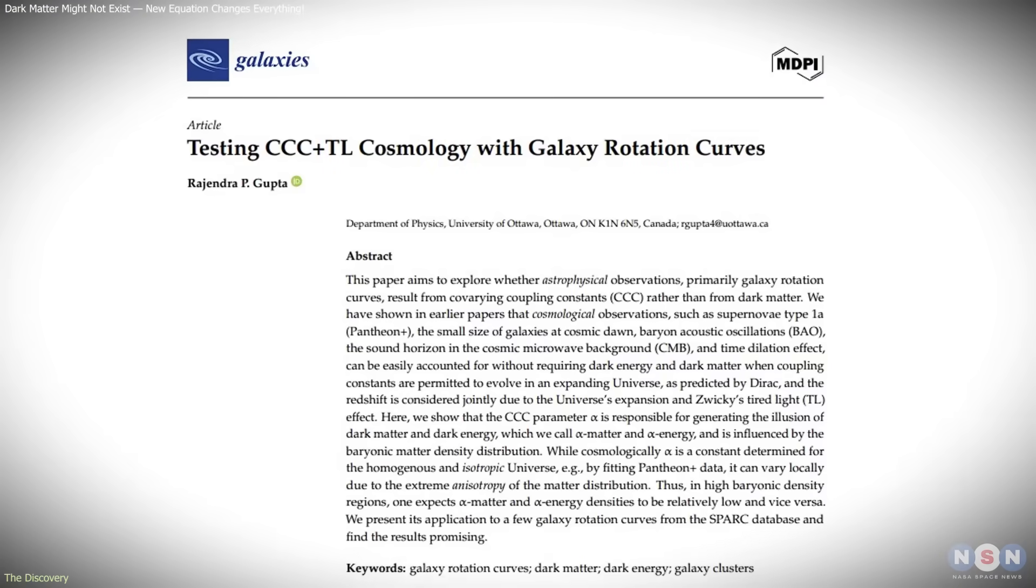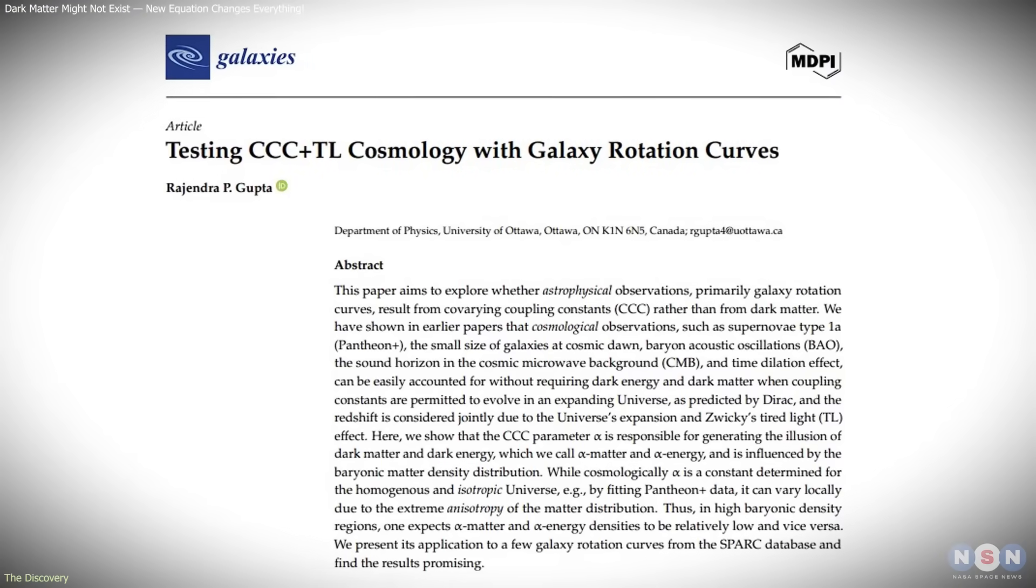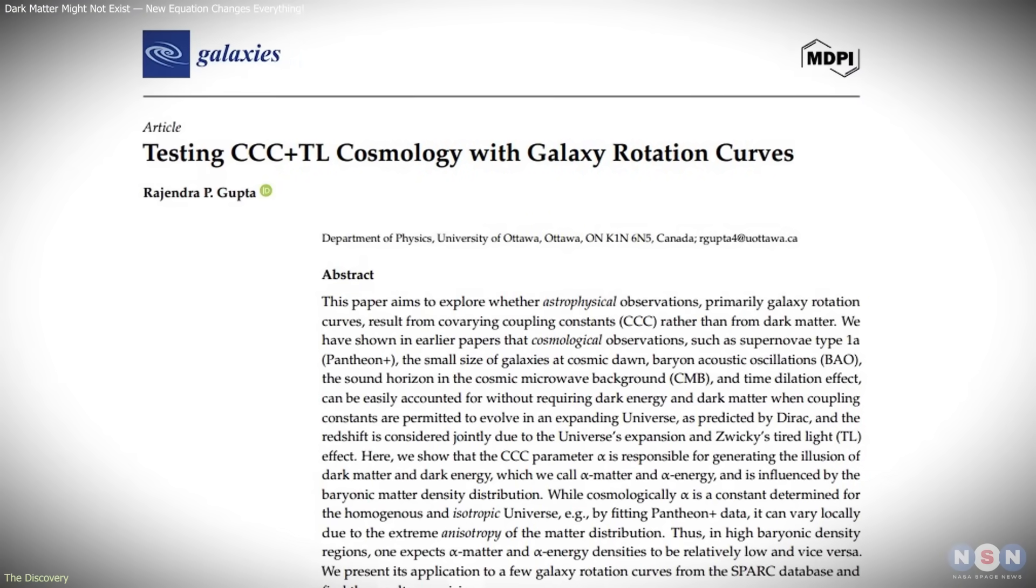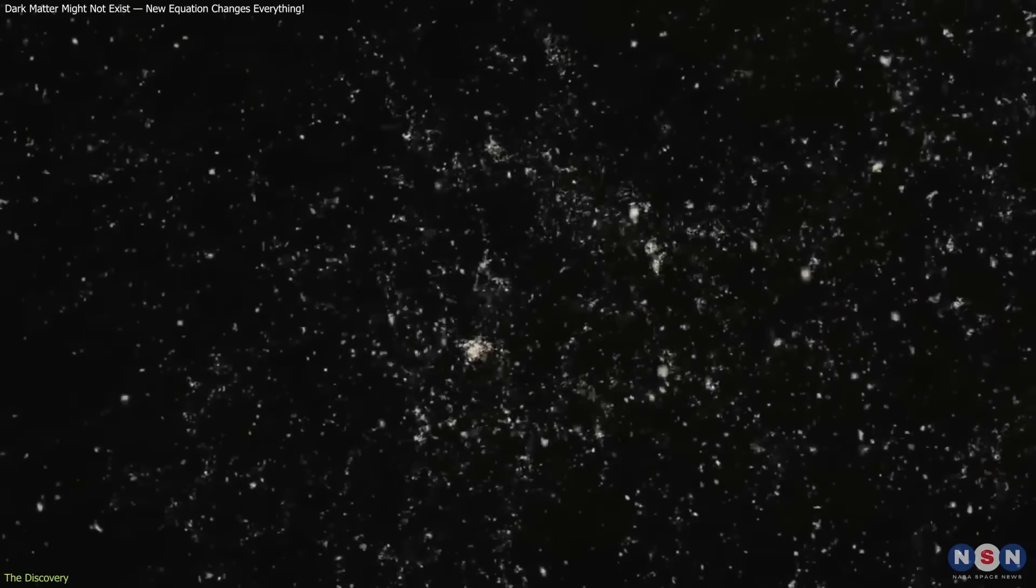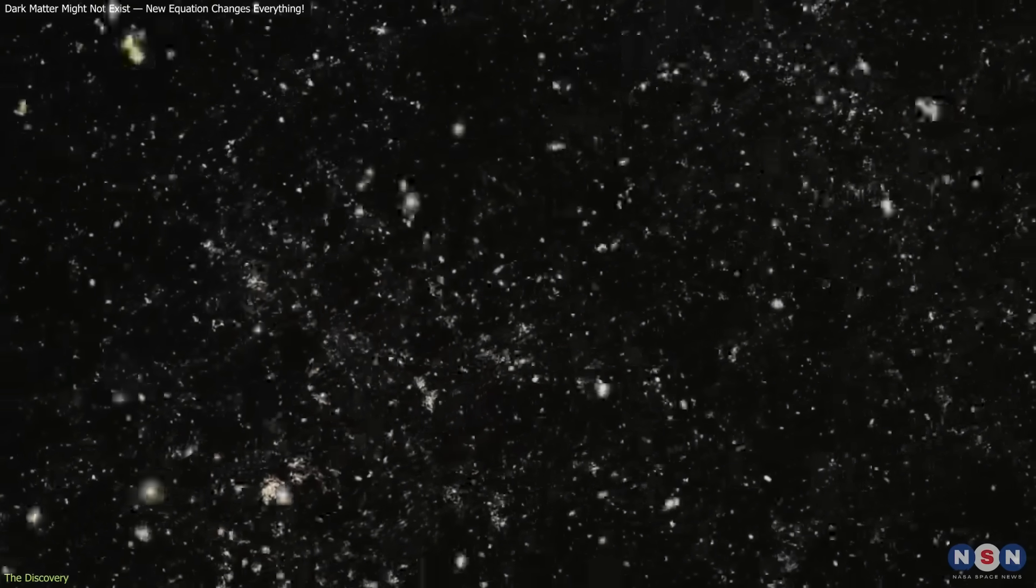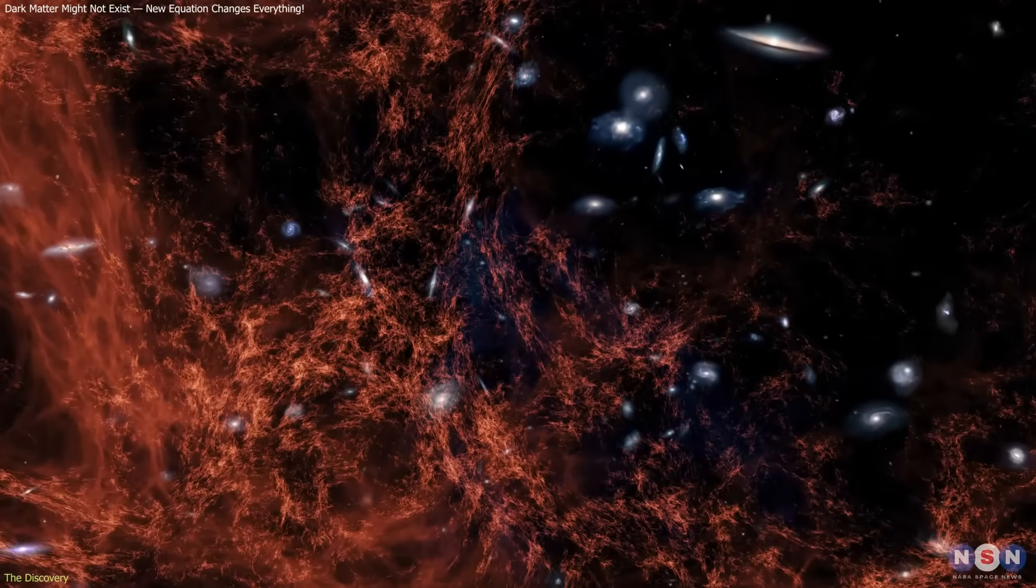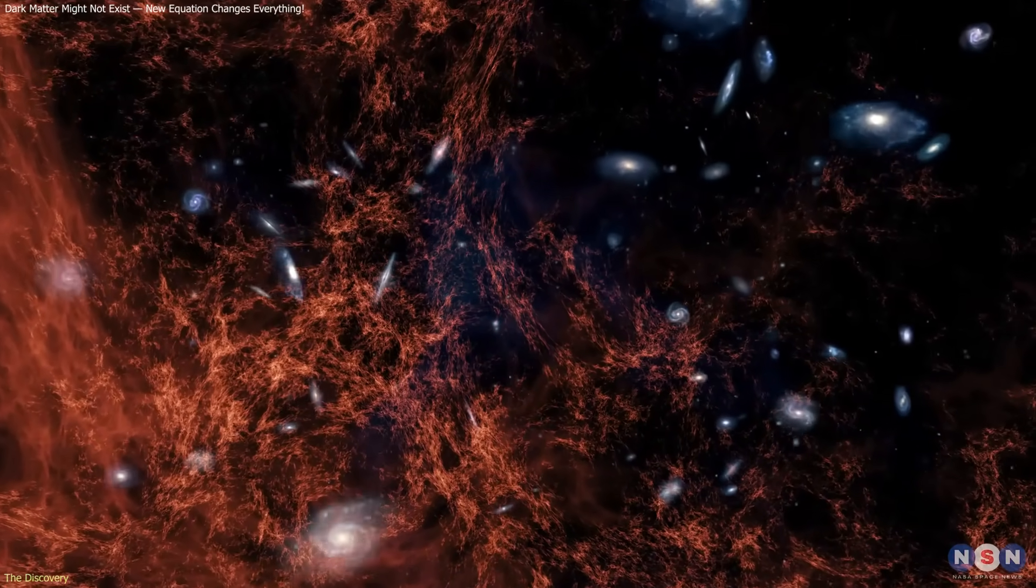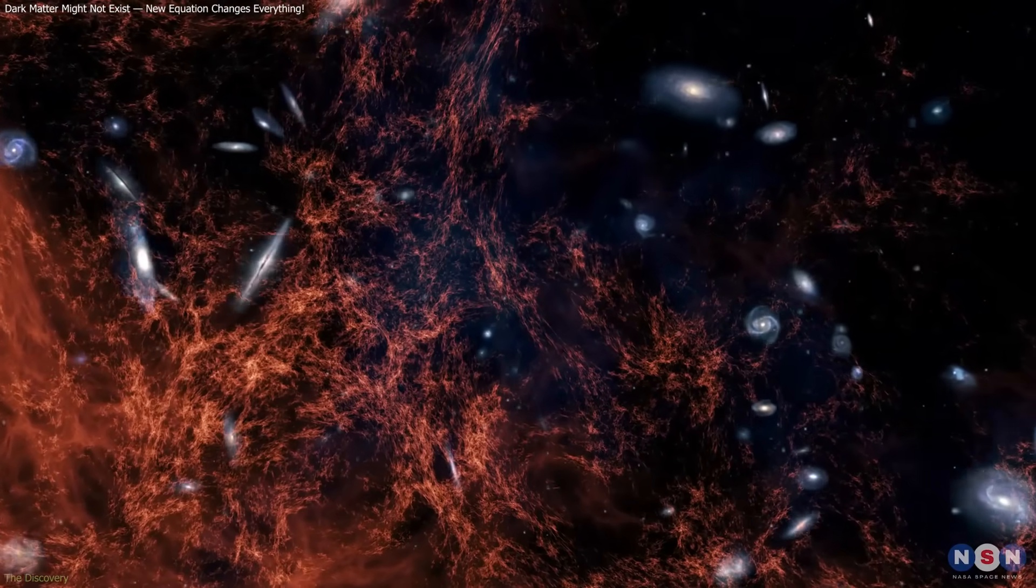While the idea is bold, Gupta acknowledges that it must pass rigorous observational tests. The theory challenges decades of cosmological data, but if proven, it could replace two of the most elusive ingredients in modern physics with one evolving equation.